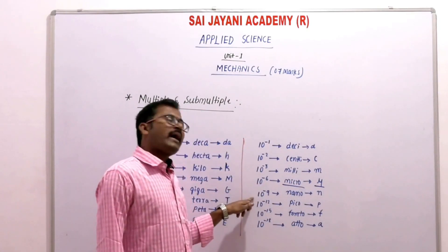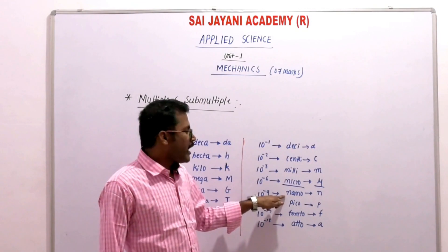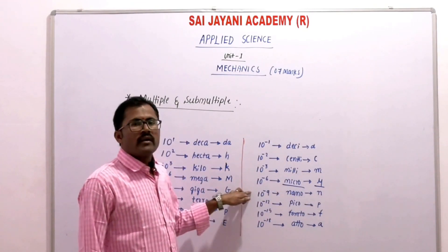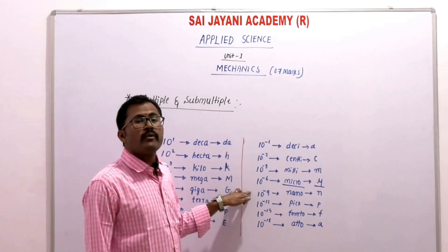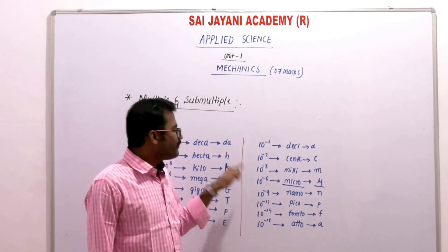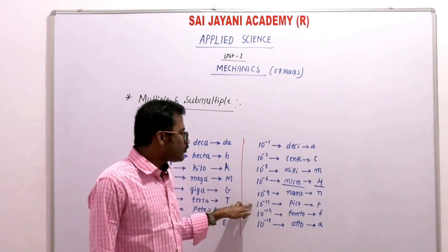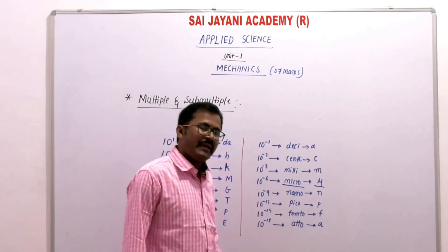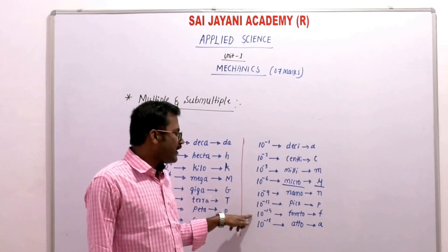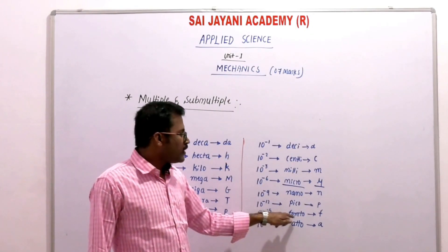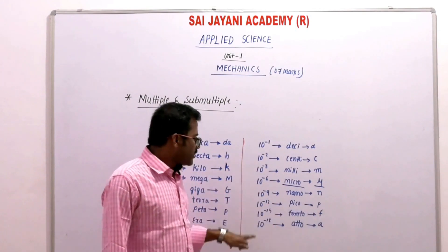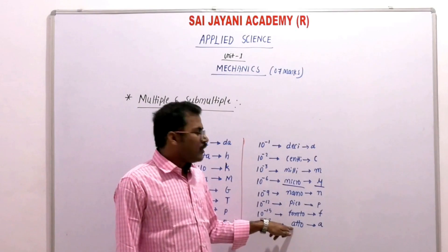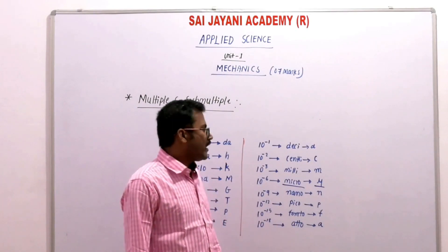10 to the power minus 9 is nano, represented by small 'n'. For example, 1 nanometer is 10 to the power minus 9 — a very small value. 10 to the power minus 12 is pico, represented by small 'p'. 10 to the power minus 15 is femto, represented by small 'f'. 10 to the power minus 18 is atto, represented by small 'a'.